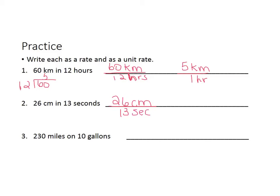To write it as a unit rate, we would need to take the 26 divided by 13, which is 2. So that tells me that you have 2 centimeters per every one second.